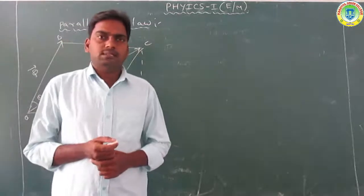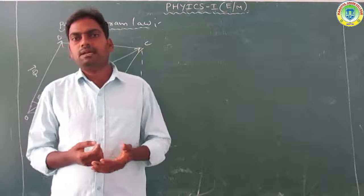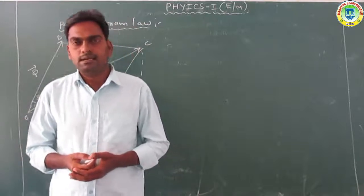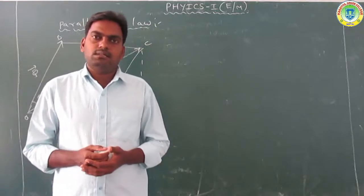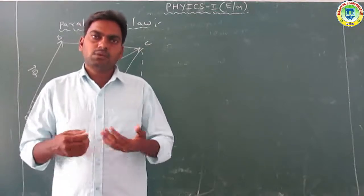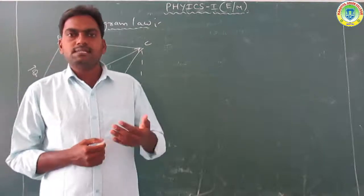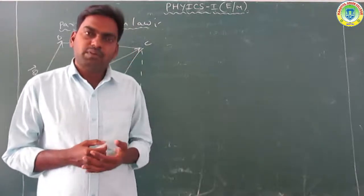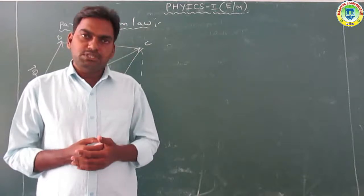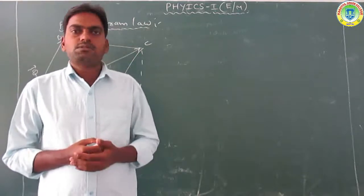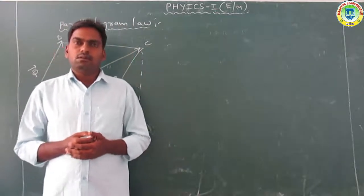Tensors have different magnitude and different direction. We also discussed types of vectors: positive vectors, negative vectors, zero vectors, null vectors, position vectors, unit vectors, etc. That was last class.